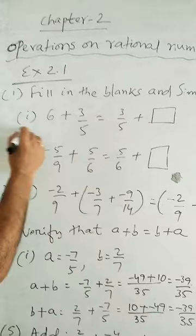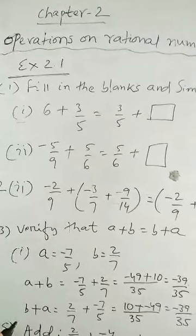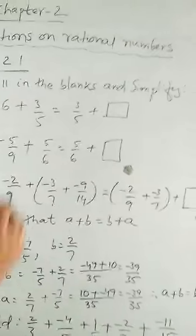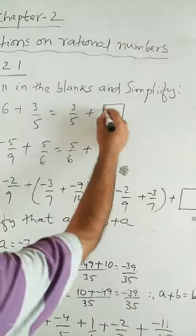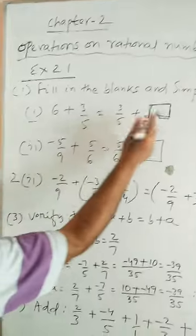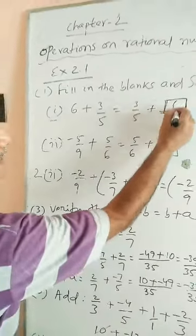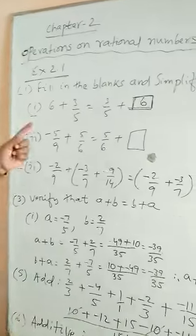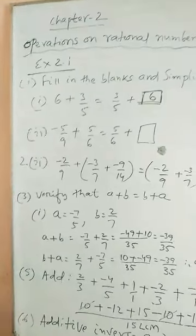Here you see the first question, 6 plus 3 by 5 equal to 3 by 5 plus blank is to be filled up. So, 6 is missing, therefore, we have to write here 6. So, 6 plus 3 by 5 equal to 3 by 5 plus 6.